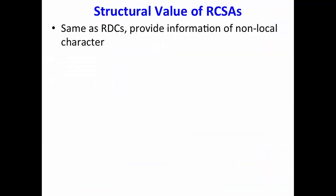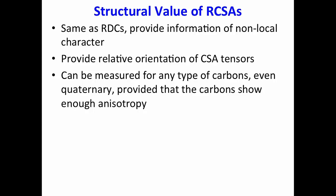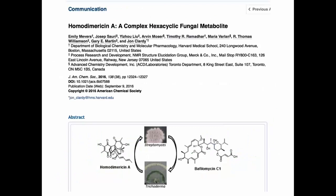So structural value of RCSA. Same as RDC provides information of non-local character, provides relative orientation of CSA tensors. It can be measured for any type of carbons, even quaternary, provided that the carbons show enough anisotropy. As I showed you here, this is what you get. You get the relative orientation of a chemical shift tensor.